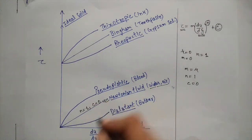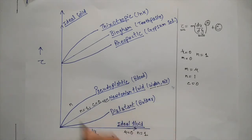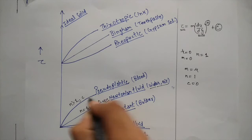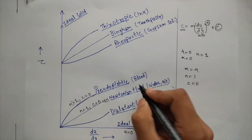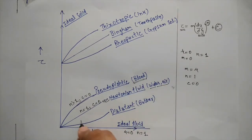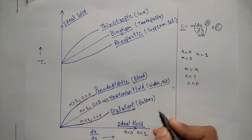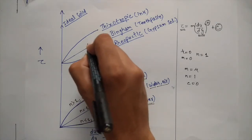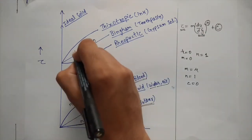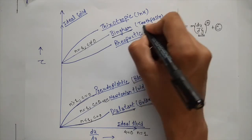With c equals 0, if the value of n is greater than 1, the graph curves upward and this fluid is known as pseudoplastic — an example is blood. If n is less than 1 with c equals 0, the fluid follows a downward-curving graph and is known as dilatant fluid — an example is butter. If c is not equal to 0 and n equals 1, the fluid is known as Bingham fluid — an example is toothpaste.